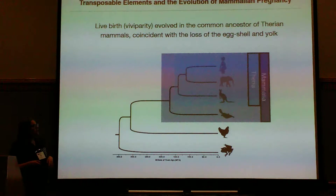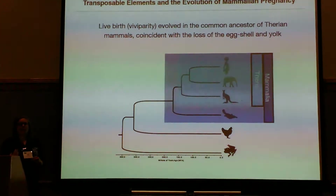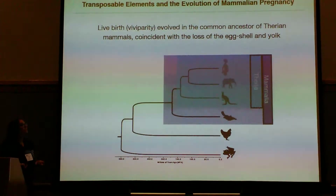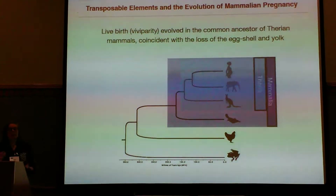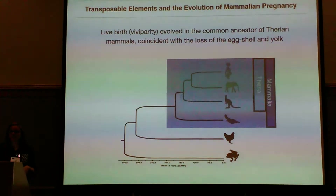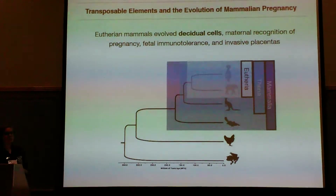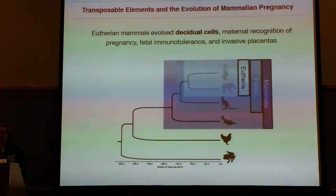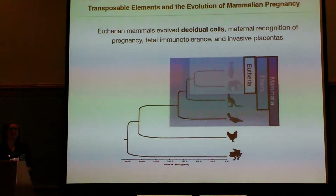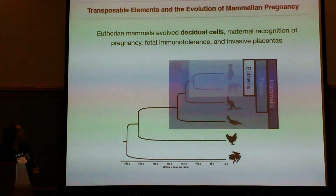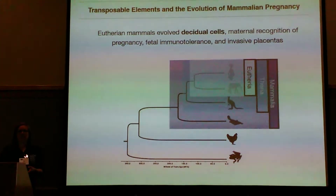Therians, which are the marsupials and the placental mammals, evolved live birth as a novelty, coinciding with the loss of the egg shell and yolk. And the eutherian mammals, which are the placental mammals, evolved the decidual cells, which mediate a lot of other innovations such as maternal recognition of pregnancy, ketogenic lines, and invasive placentas.